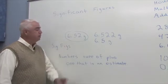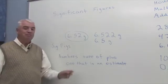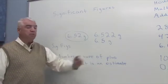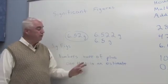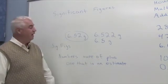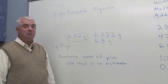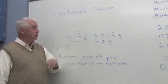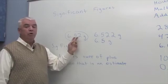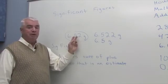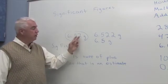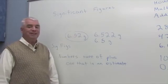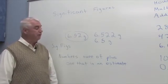The definition of significant figures is that they're numbers that we're sure of, plus one that's an estimate. And so coming back to the 6.52, it could be that 2 is really the value, or it might be a 1, or it might be a 3. But even though this last digit is an estimate, it's still considered a significant figure.